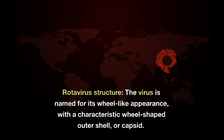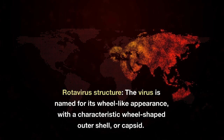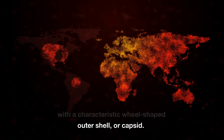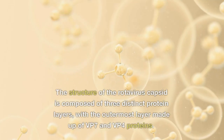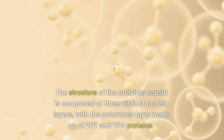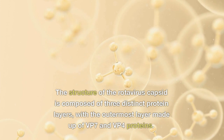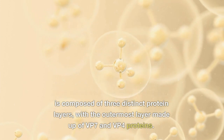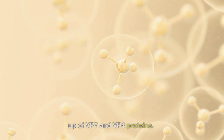Rotavirus Structure. The virus is named for its wheel-like appearance, with a characteristic wheel-shaped outer shell, or capsid. The structure of the rotavirus capsid is composed of three distinct protein layers, with the outermost layer made up of VP7 and VP4 proteins.